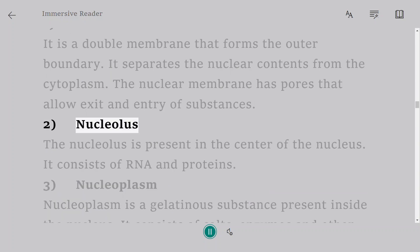2. Nucleolus. The nucleolus is present in the center of the nucleus. It consists of RNA and proteins.